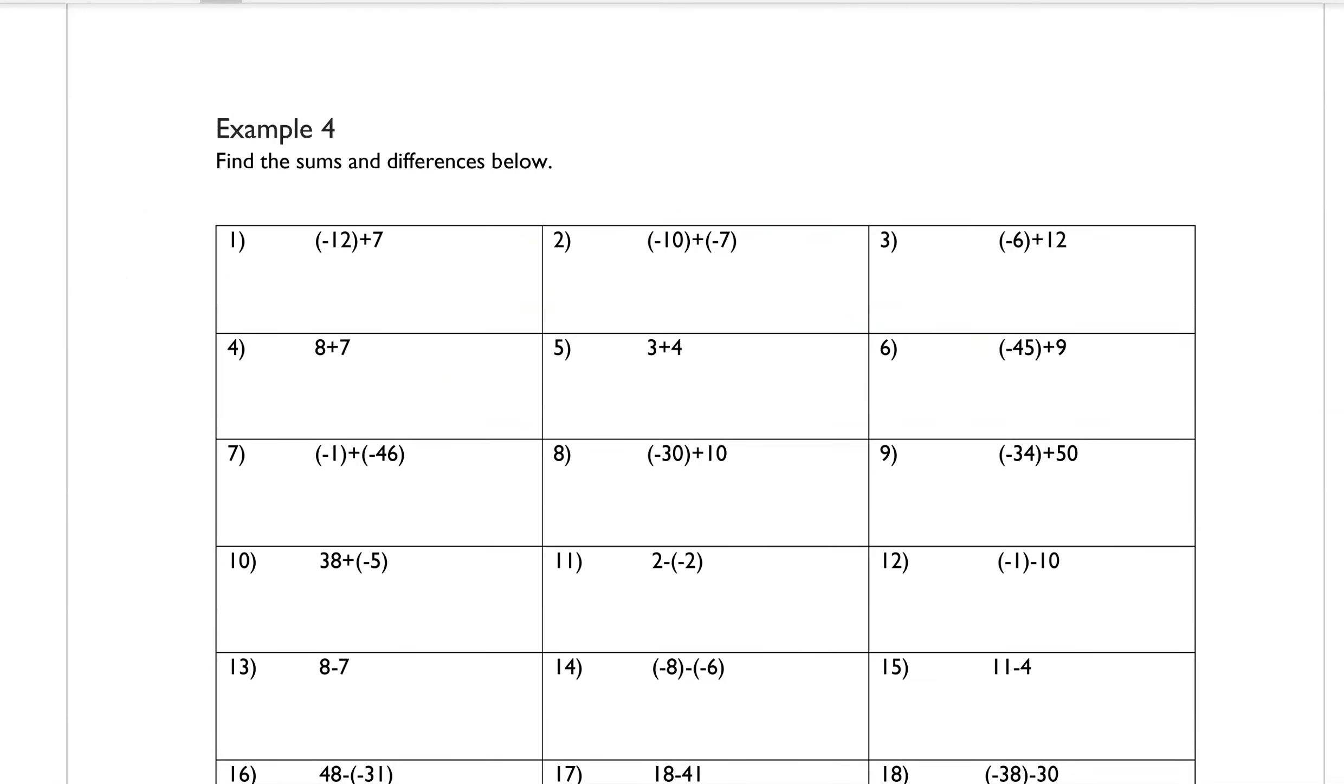So I'm going to go through a couple of examples and then let you solve the rest of these on your own. And you want to be able to do these without a calculator. So the first one says negative 12 plus 7. Now, when one is negative and one is positive, what you want to do is you want to subtract just the numeric values without the positive or negative. So the first one here, I'm going to do 12 minus 7.